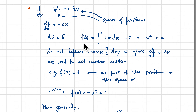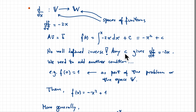This presents a difficulty: there is no well-defined inverse for d/dx, because any function of the form minus x-squared plus C satisfies df/dx = minus 2x. Any constant works, so the inverse is not uniquely defined. We need an additional condition to make the inverse well-defined — this typically comes from initial conditions or boundary conditions.